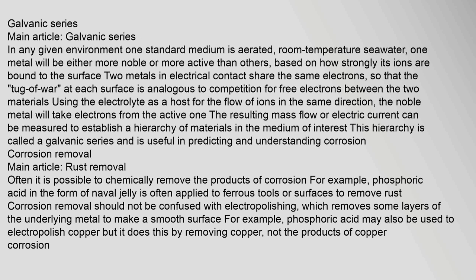Corrosion removal — main article: rust removal. Often it is possible to chemically remove the products of corrosion. For example, phosphoric acid in the form of naval jelly is often applied to ferrous tools or surfaces to remove rust. Corrosion removal should not be confused with electropolishing, which removes some layers of the underlying metal to make a smooth surface. For example, phosphoric acid may also be used to electropolish copper, but it does this by removing copper, not the products of copper corrosion.